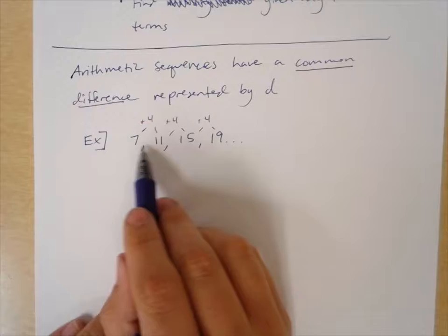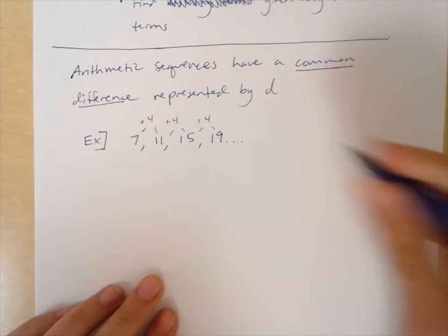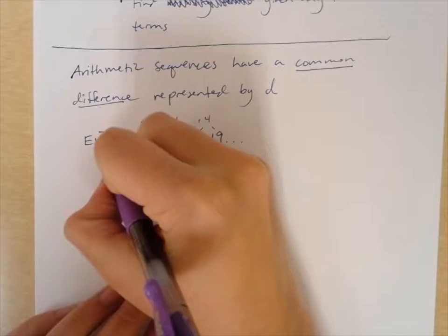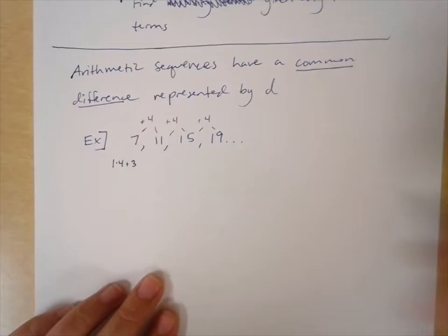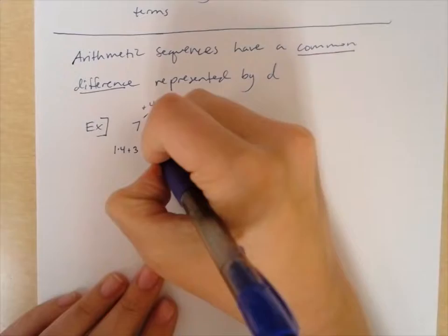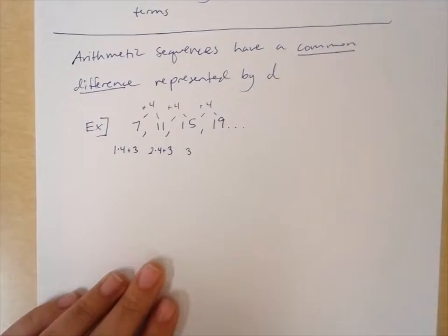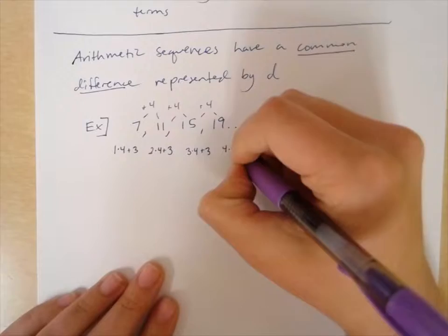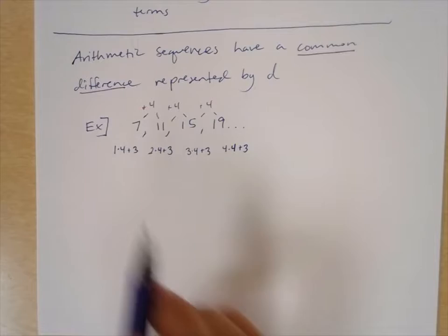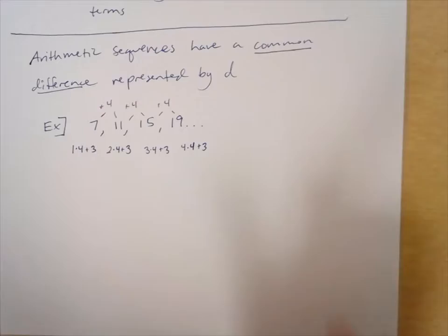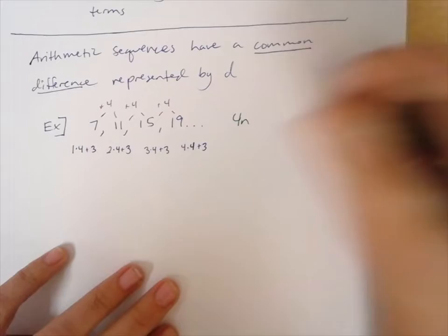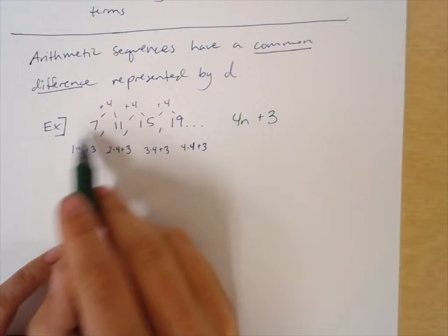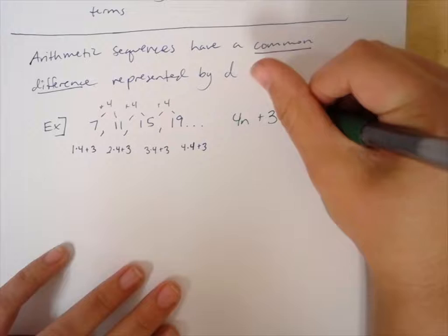Here's how we can write a formula for this. We can think of 7, 11, 15, and 19 like this: 7 is 1 times 4 plus 3; 11 is 2 times 4 plus 3; 15 is 3 times 4 plus 3; and 19 is 4 times 4 plus 3. You can see every time we're multiplying by 4 and adding 3, so our formula is 4n plus 3. We substitute the n value in and get the next term. This is a recursive formula.